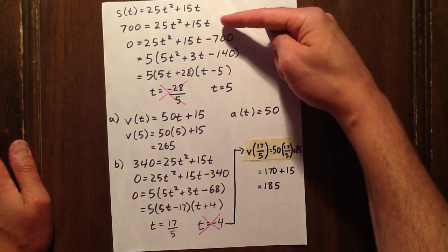That's when the displacement is 700 meters, so we set S(t) equal to 700 and solve for t. When we do that, we get a negative value for t, which in the context of this question isn't correct, or a positive value for t, which is.